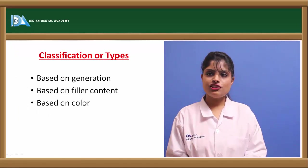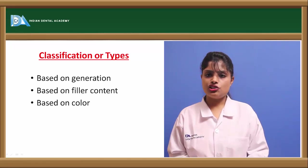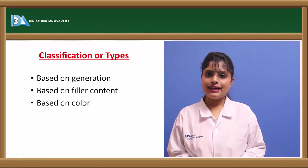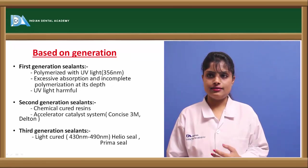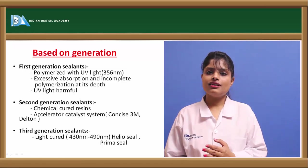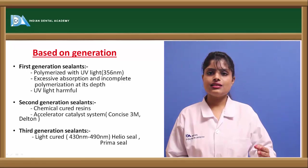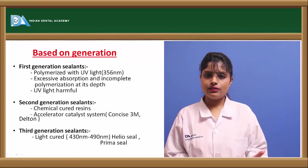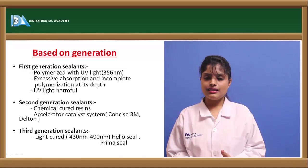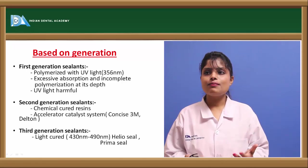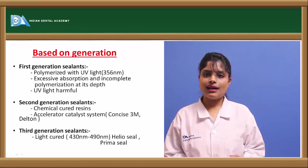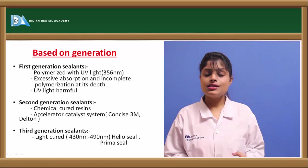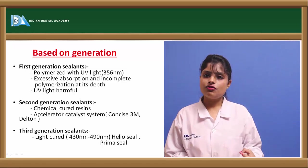The various types of pit and fissure sealants can be based on the generation, the filler content, and on the color. Coming to the various generations: the first generation belongs to UV light-cured pit and fissure sealants, which have a light wavelength of 356 nm. A major disadvantage is that excessive absorption of such light may lead to incomplete polymerization at a particular depth.